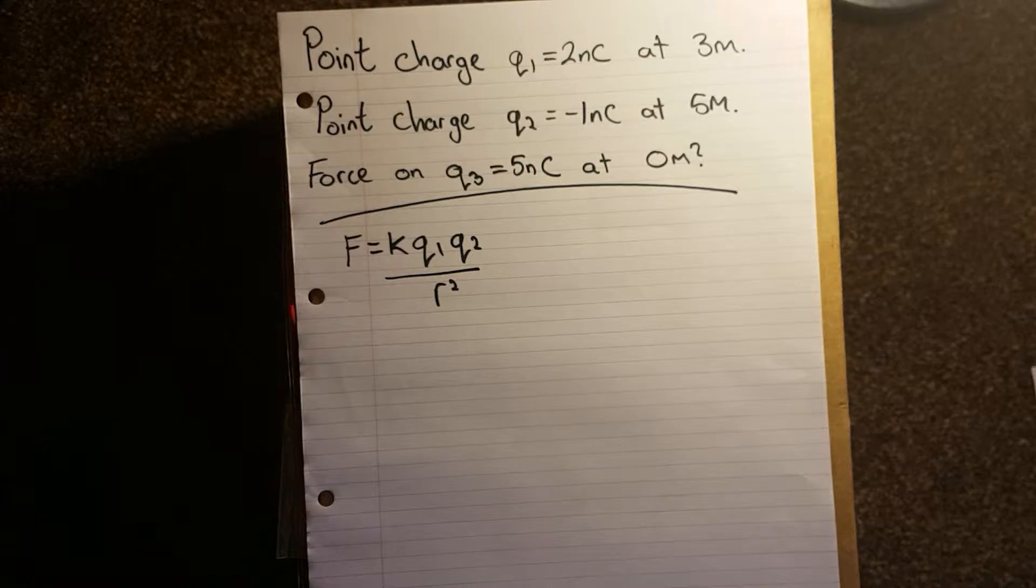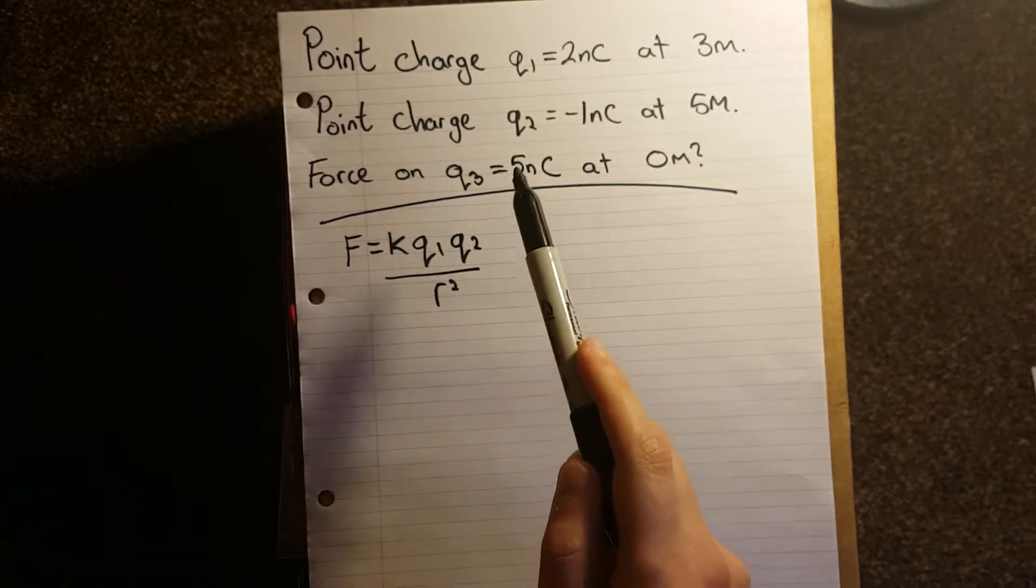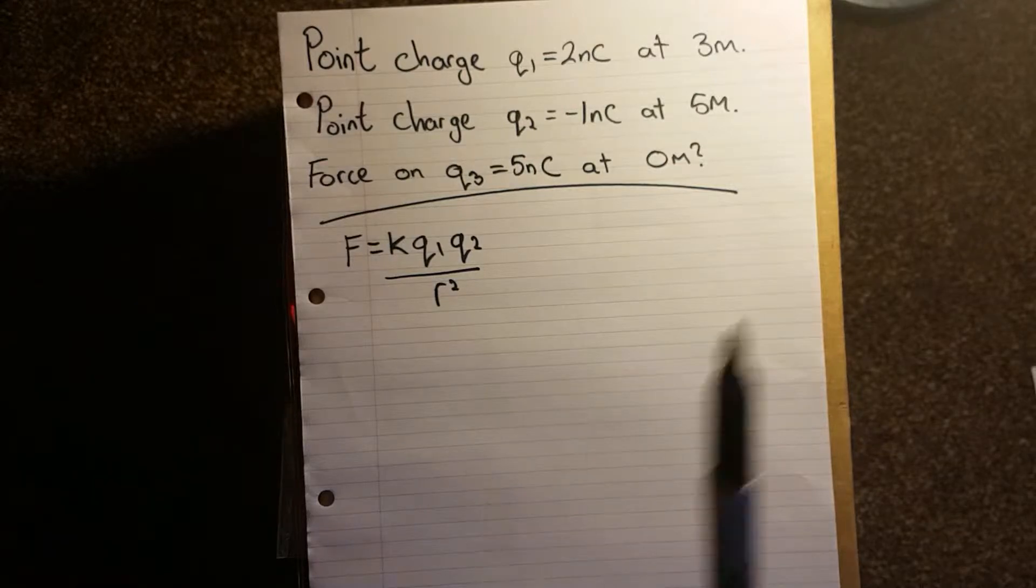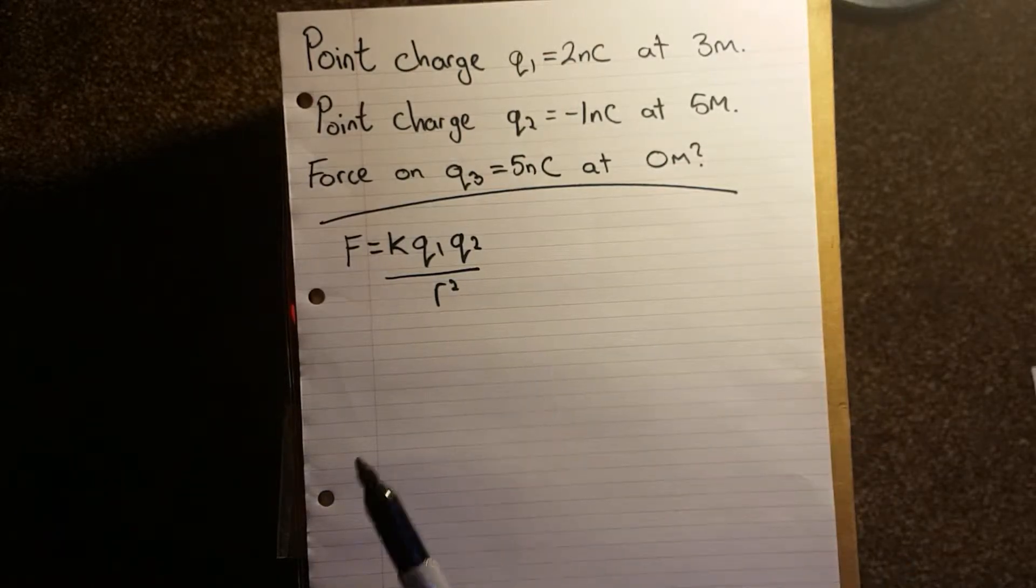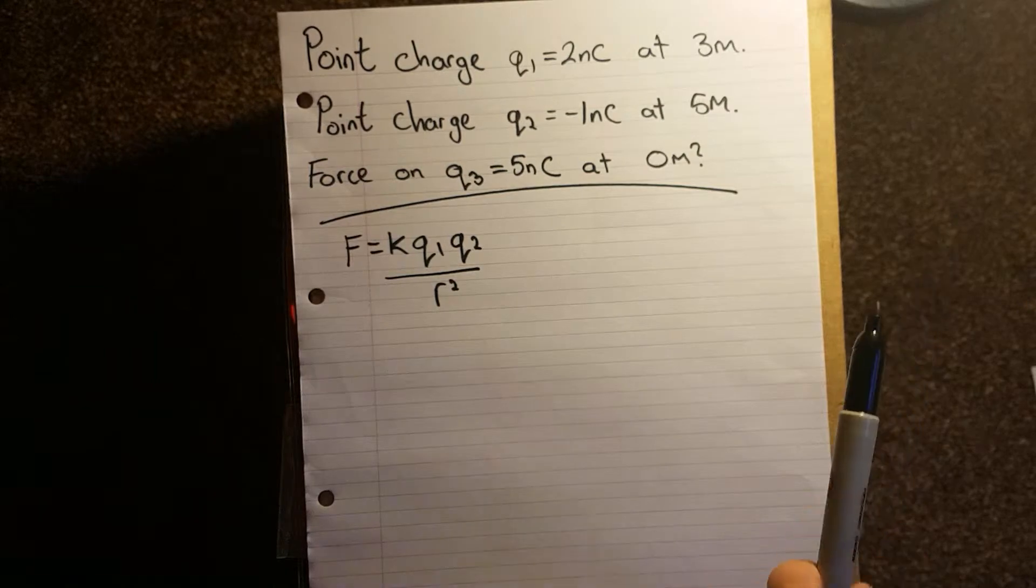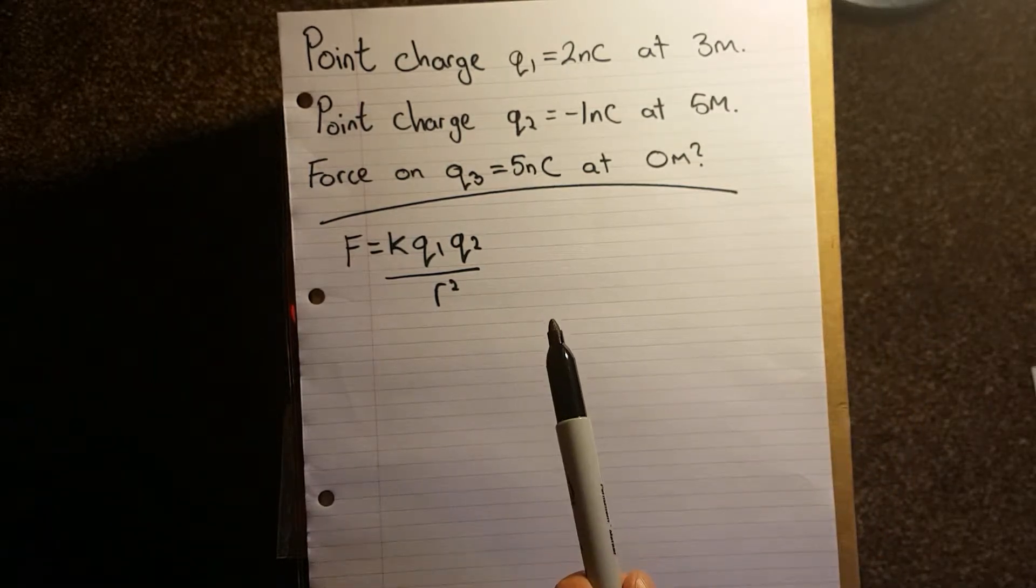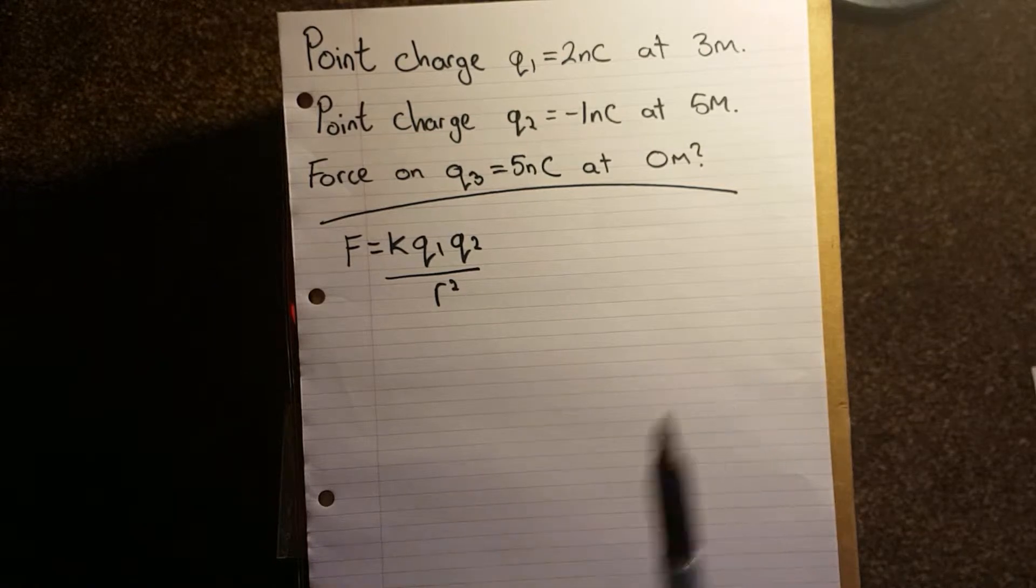So if we have a point charge Q1 equals two nano coulombs at three metres, we have a point charge Q2 equals minus one nano coulomb at five metres. What is the force acting on Q3 with five nano coulombs at zero metres? So the origin in this case.